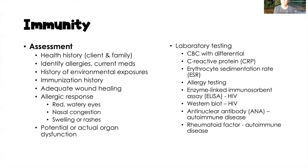For assessment, we always start with health history — client and family history — and then assess allergies and current medications, which gives us a good idea of contributing risk factors. We also want to look at environmental exposures and immunization history. We can assess for adequate wound healing, since a suppressed immune system impairs healing. Additionally, assess for a history of severe allergic responses: red watery eyes, nasal congestion, swelling, rashes, wheezing, and coughing, as well as potential or actual organ dysfunction related to autoimmune disorders like rheumatoid arthritis or lupus.